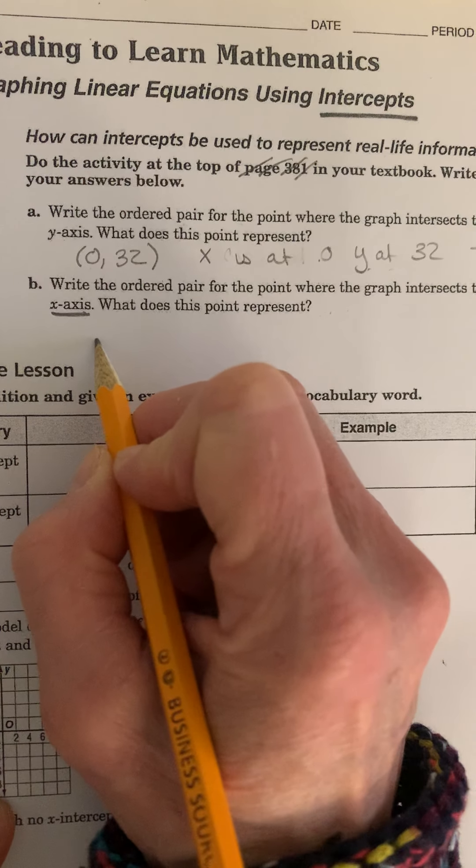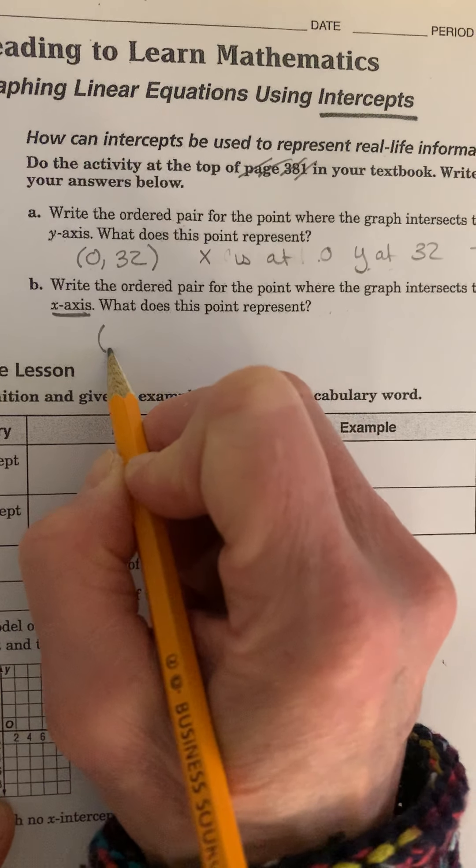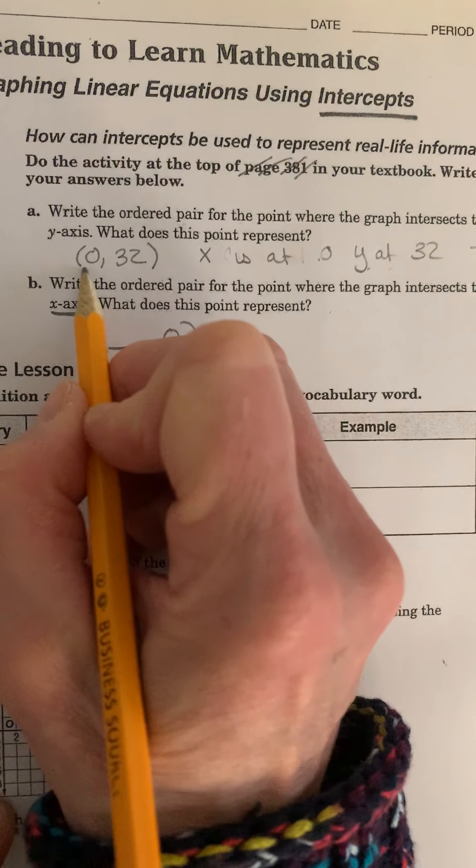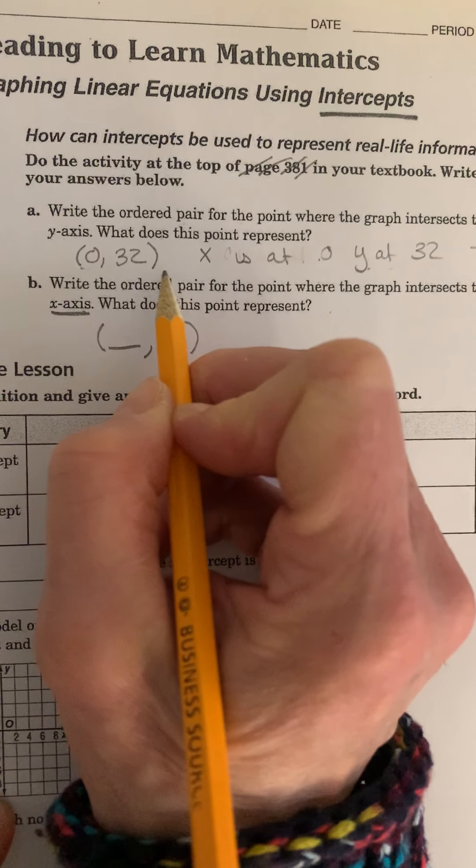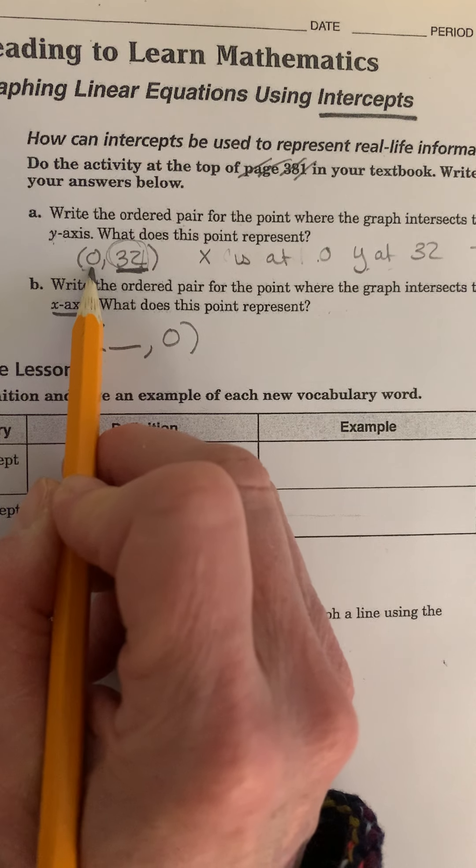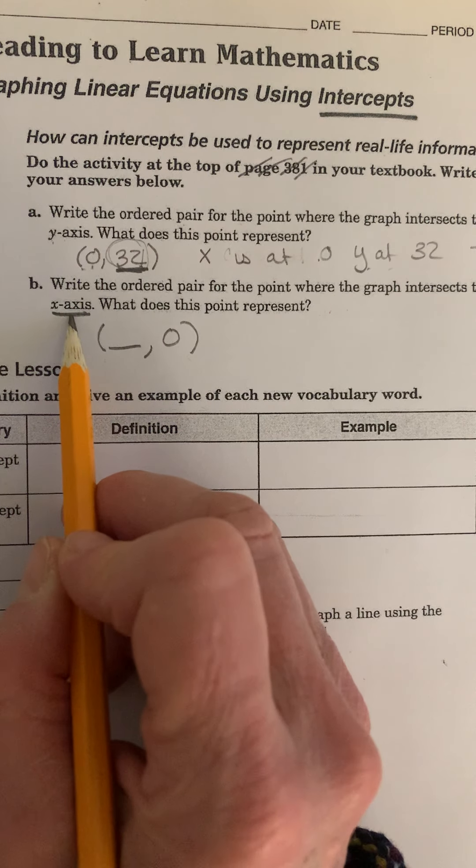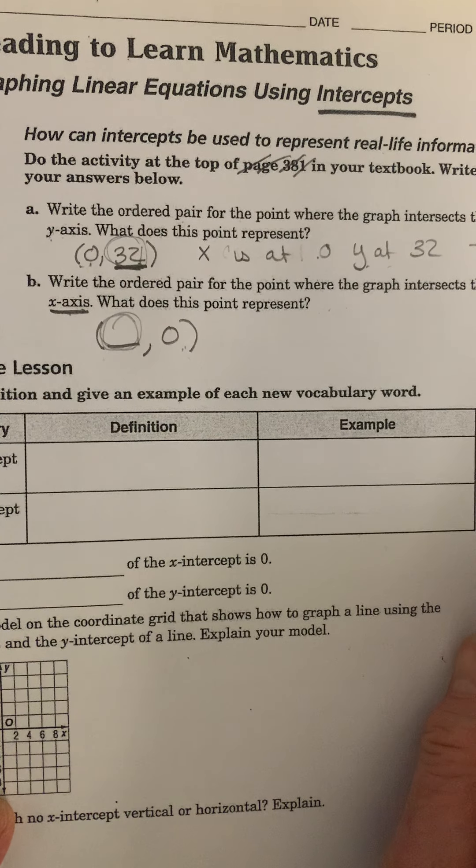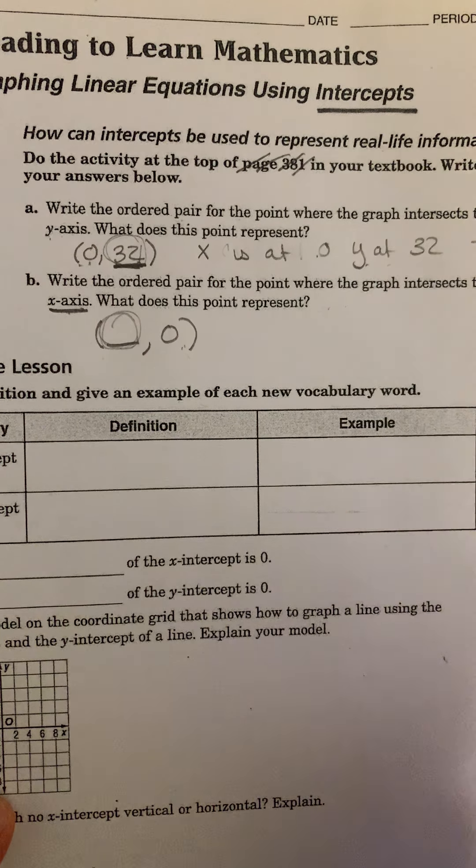So if I want the x-intercept, then I want a number for x and I want y to be 0. That's the key with this. When I want the y-intercept, I will have a number for y but I'll have a 0 for x. When I want the x-intercept, I will have a number for x and y will be 0.